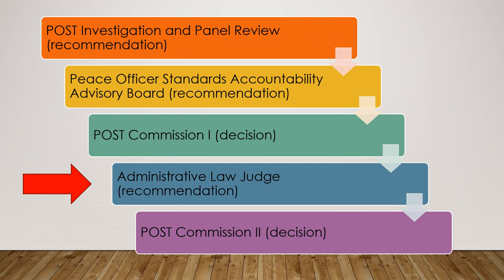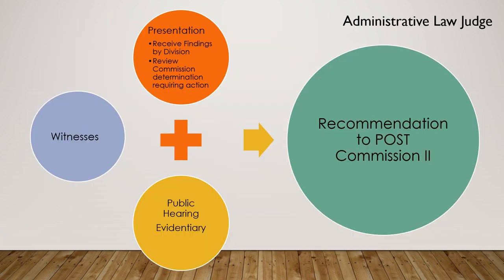After the first commission stop where the vote to take action reaches two-thirds or higher, the case moves to the administrative law judge. The ALJ hearing is different — this is where evidence can be presented. The ALJ receives findings from the division and reviews the commission's determination. Witnesses and evidence can be introduced, and this is also a public hearing. At the conclusion of the ALJ hearing, a recommendation is made and delivered to the final stop in the process: back before the commission.